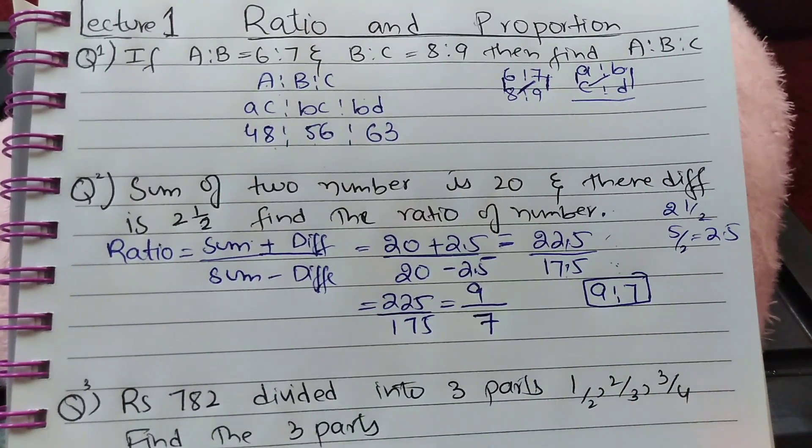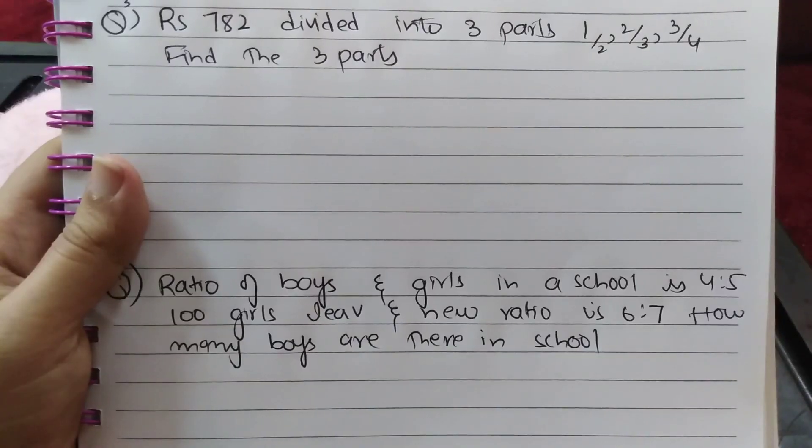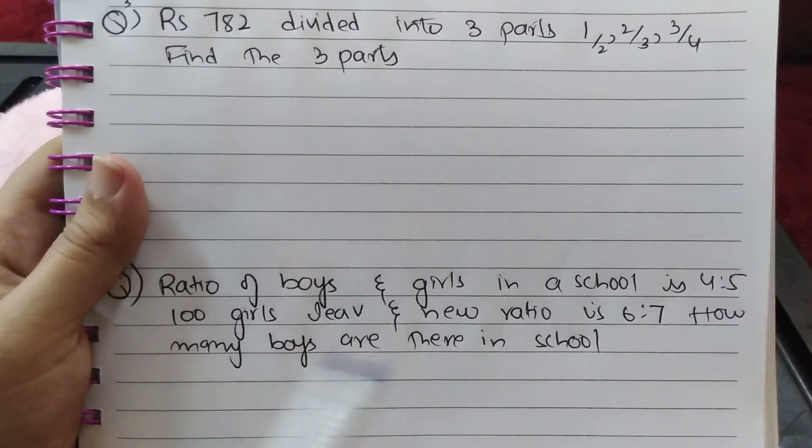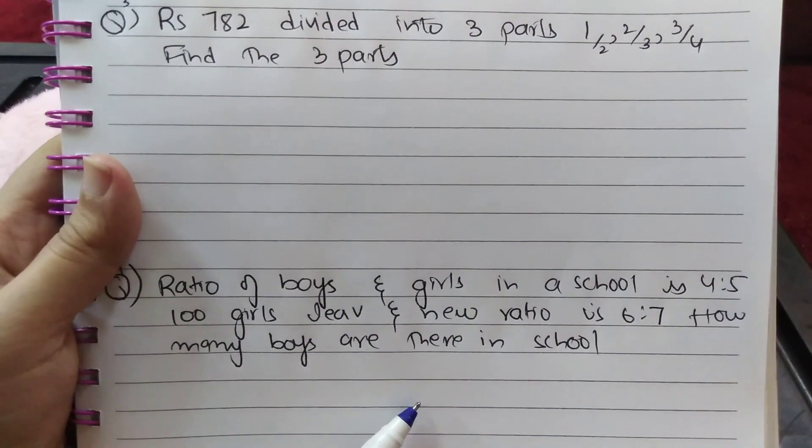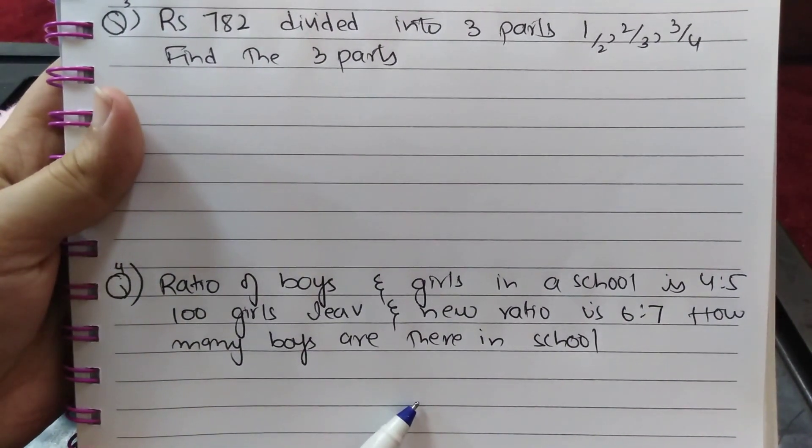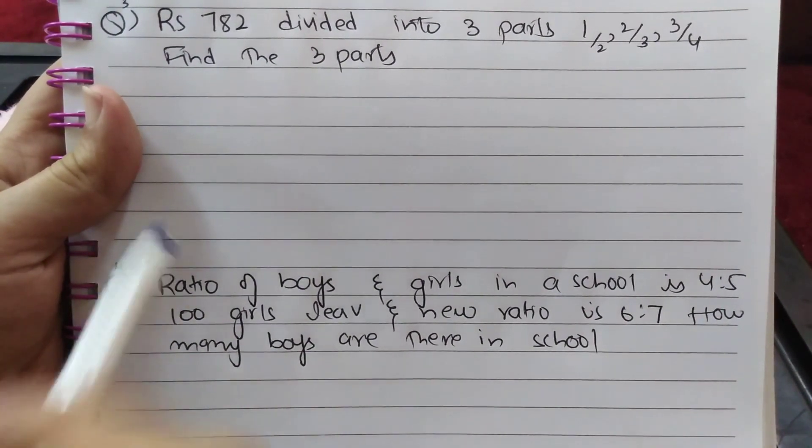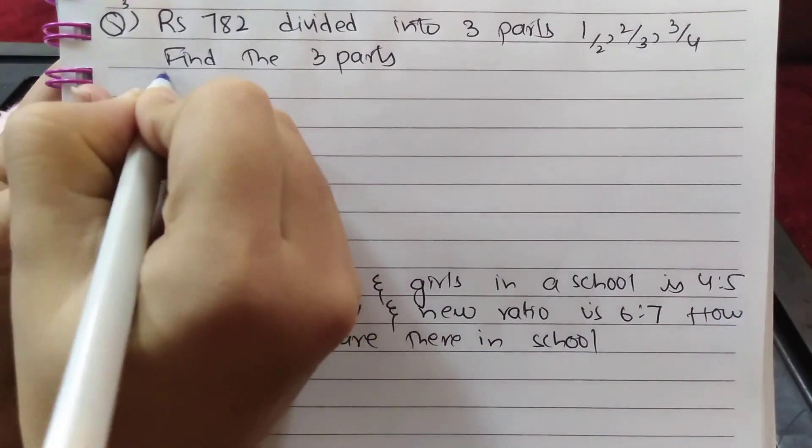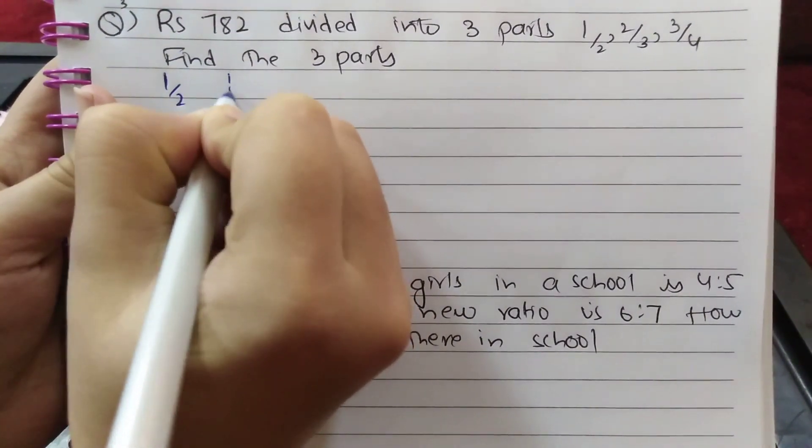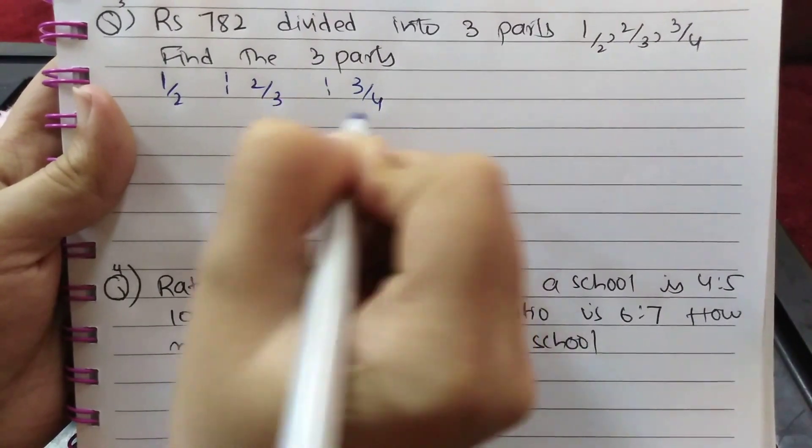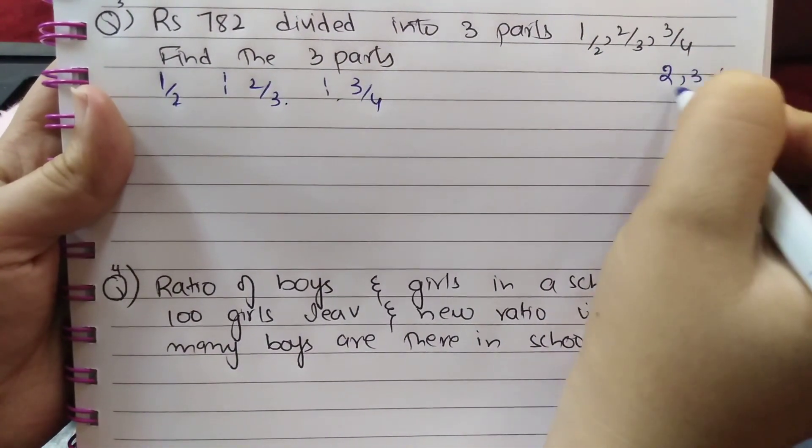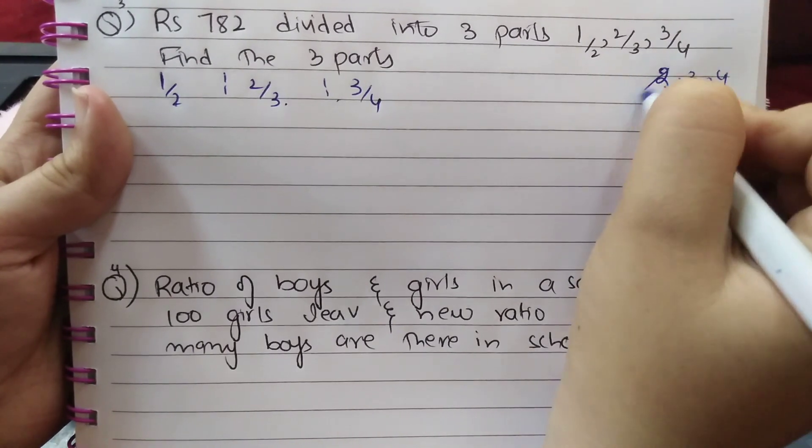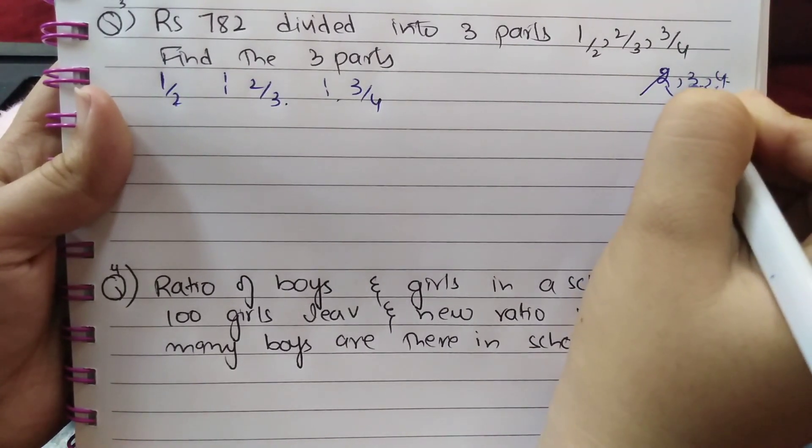Question number 3: Rs 782 divided into 3 parts in the ratio ½:⅔:¾. Find the 3 parts. First step is to take LCM of 2, 3, and 4. As 2 is a factor of 4, ignore 2 and just multiply 3 and 4 to get 12 as the LCM.